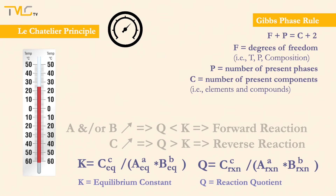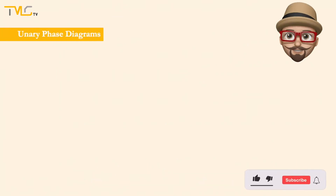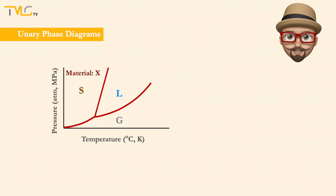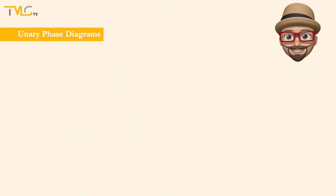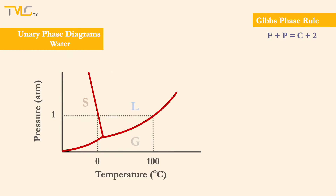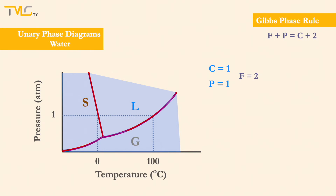Now we can go back to the unary phase diagrams. A unary phase diagram shows the relationship between the present phases and the temperature and pressure for a pure substance. Thus, neither does the composition change in unary systems, nor is it represented in unary phase diagrams. Applying the Gibbs phase rule to unary phase diagrams, starting with water: in a single-phase region with one component and one phase, there are two degrees of freedom. Such material systems are called bivariant equilibrium, meaning temperature and pressure can be altered independently and simultaneously without causing any phase transformation.